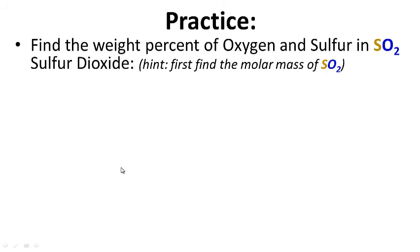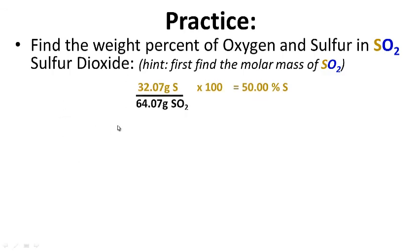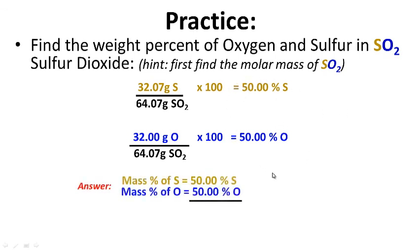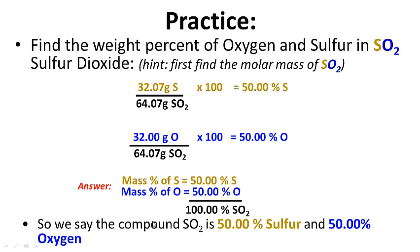Practice: find the weight percent of oxygen and sulfur in sulfur dioxide, SO2. Hint: first find the molar mass of SO2. The molar mass of SO2 is 64.07 grams per mole. Sulfur has a molar mass of 32.07: 32.07 divided by 64.07 times 100 gives us 50% sulfur. Careful — there are two oxygen atoms, so it's 16 plus 16 equals 32 grams: 32 divided by 64.07 times 100 gives us 50% oxygen. Notice they add up to 100. SO2 is 50% sulfur and 50% oxygen by weight.